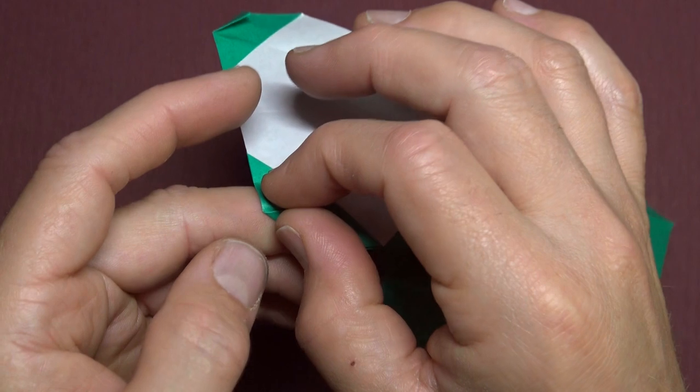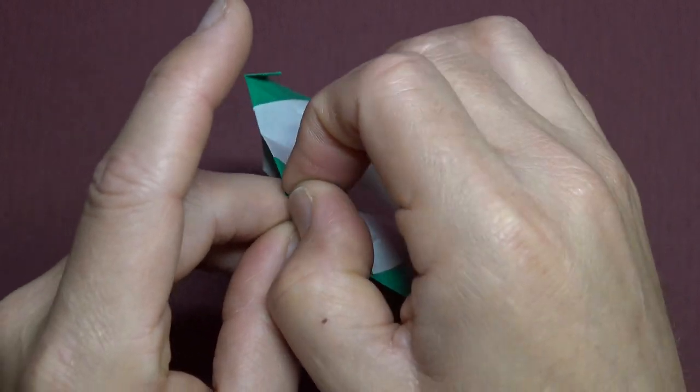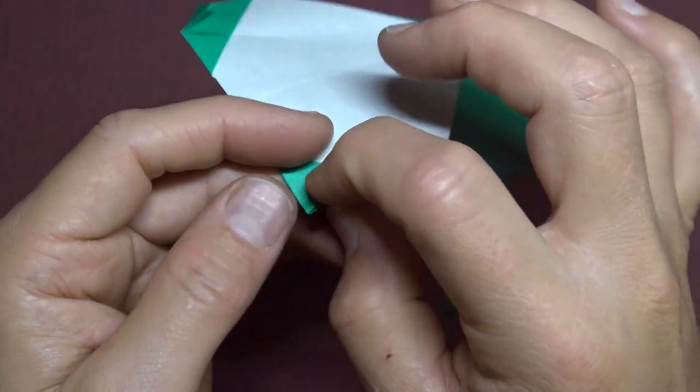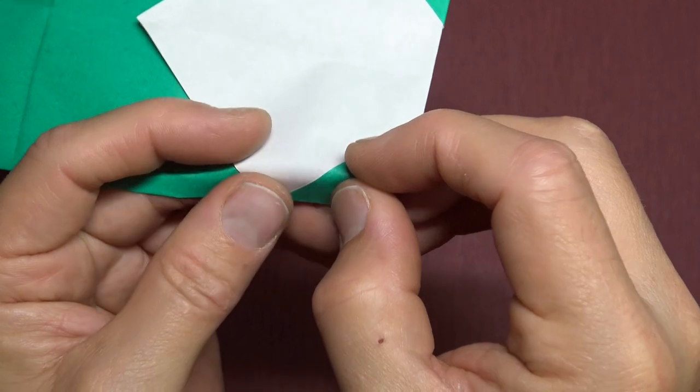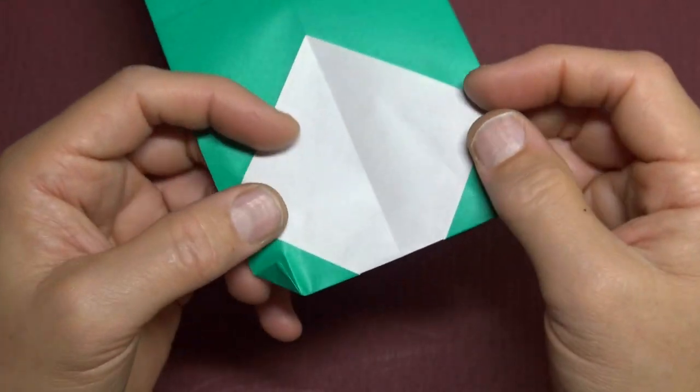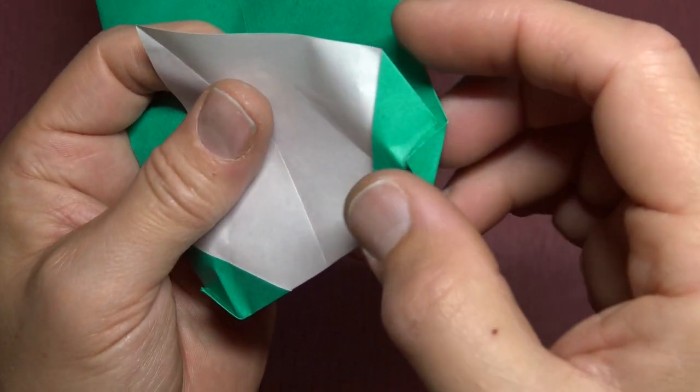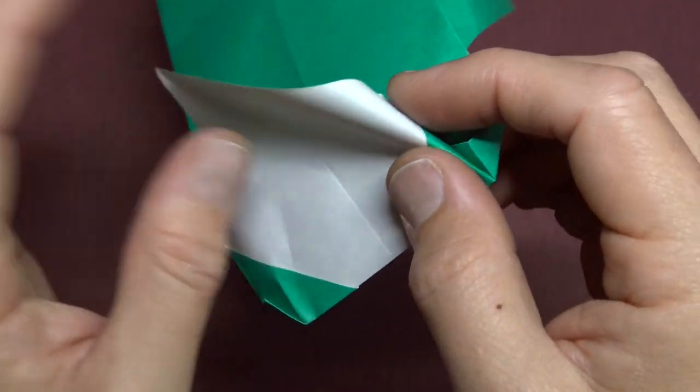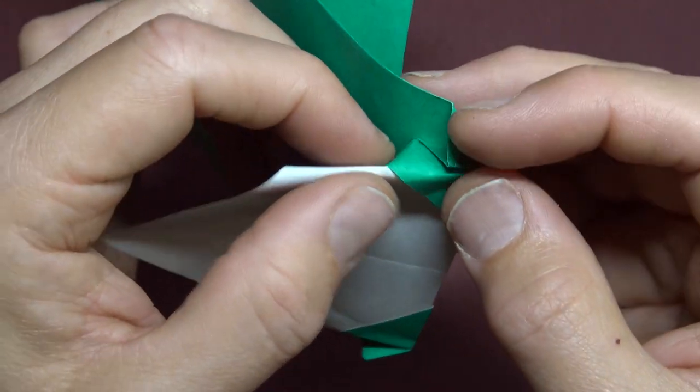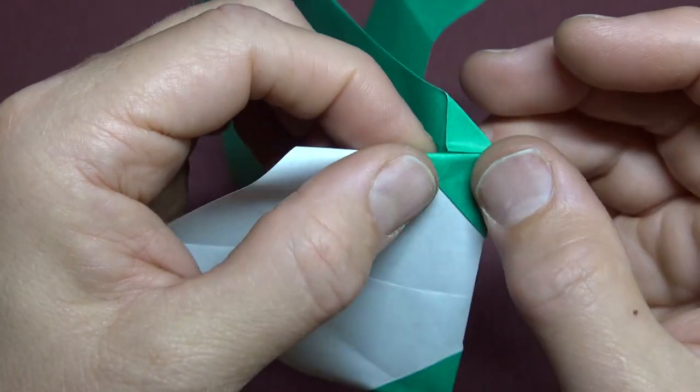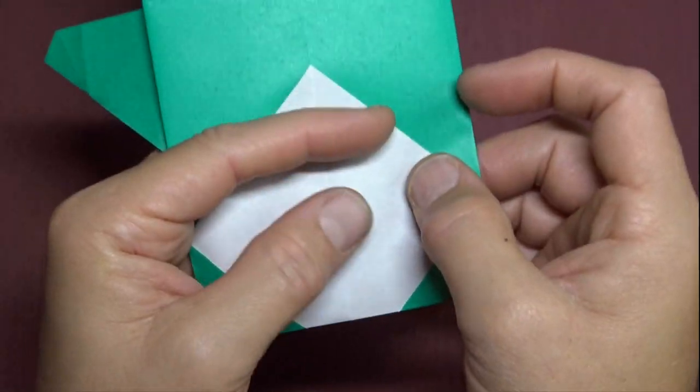Now we're going to make a little pinch mark right on this edge. Just like that. And repeat. Now take this flap and fold it behind. Like that. It was like this and we just folded it on the pinch mark. And extend that fold, making sure that it's parallel with this edge. And repeat.